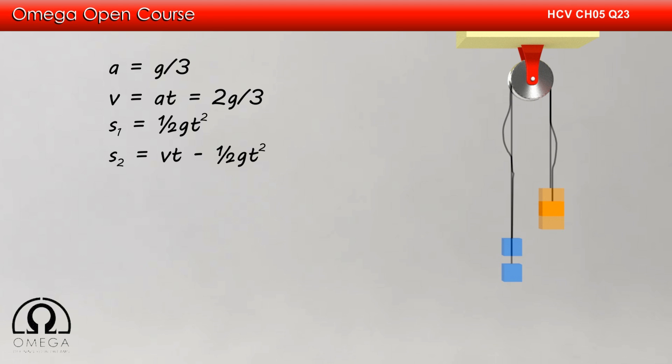The lighter block is moving with velocity 2g/3 in the upward direction with a downward acceleration of g. Therefore, its displacement is vt - ½gt².